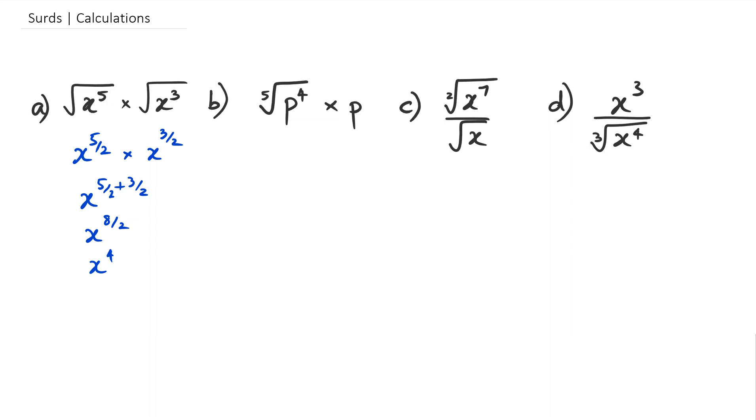Now looking at question B, we've got the fifth root of p to the power of 4, so that's going to be p to the power of 4 over 5, multiplied by p. Now remember, p actually has a power of 1, so I'm going to just put down that 1 there, and then, combining the powers together, I've got to add the powers. So 4 over 5 plus 1. 1 could be written as 5 over 5. The reason I'm doing that is to keep the denominators the same, which means I'm going to get p to the power of 9 over 5.